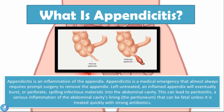Now that we know what the appendix is, let's talk about what appendicitis is. Appendicitis is an inflammation of the appendix and is a medical emergency that almost always requires prompt surgery to remove the appendix. Left untreated, an inflamed appendix will eventually burst or perforate, spilling infectious materials into the abdominal cavity. This can lead to peritonitis — a serious inflammation of the abdominal cavity's lining, called the peritoneum — which can be fatal unless treated quickly with strong antibiotics.